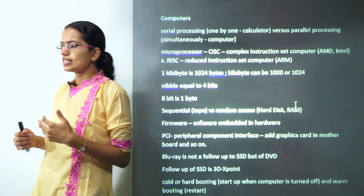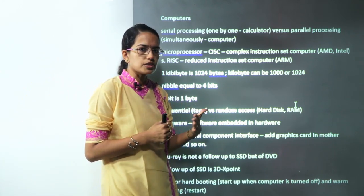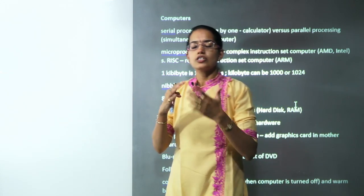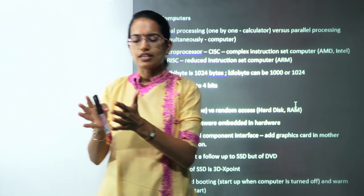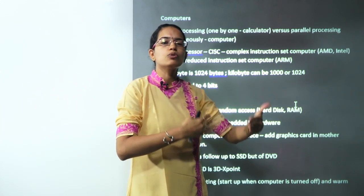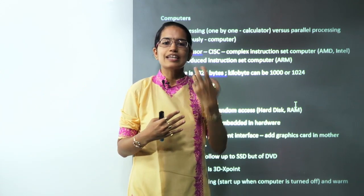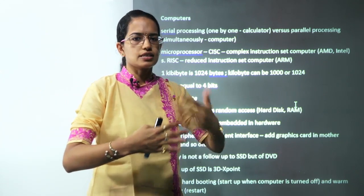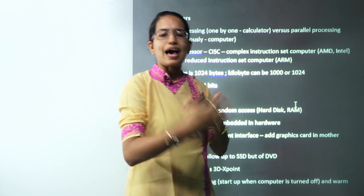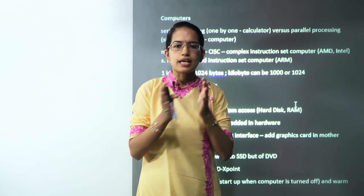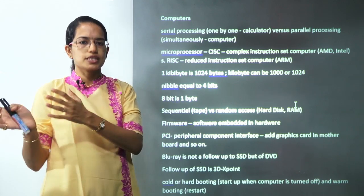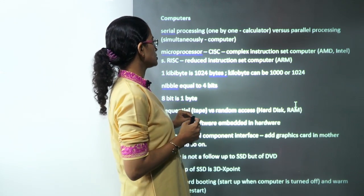Computers basically do parallel processing, where one processing and a second processing can go simultaneously, not one after the other. Serial processing goes one after the other. For example, a calculator: you do one process and then the next — that is serial processing. Computers do parallel processing, so one job runs simultaneously with another job and a third job. Two or three functions can go together on a computer, and that is known as parallel processing.